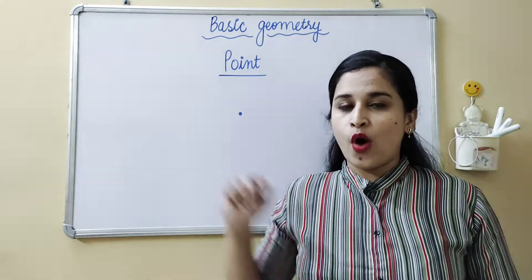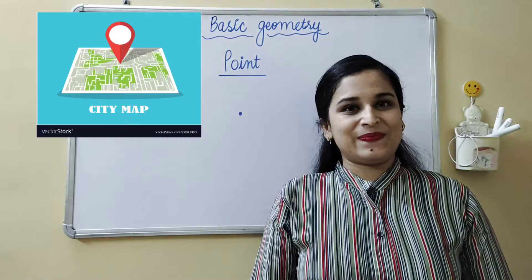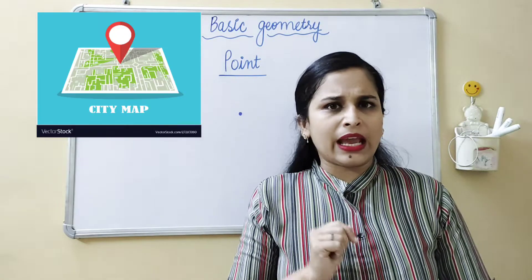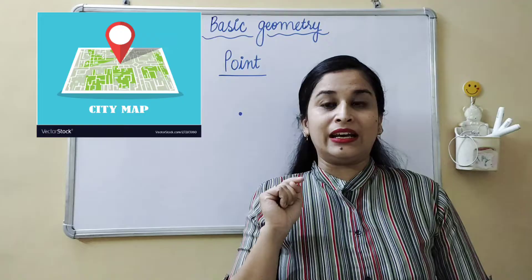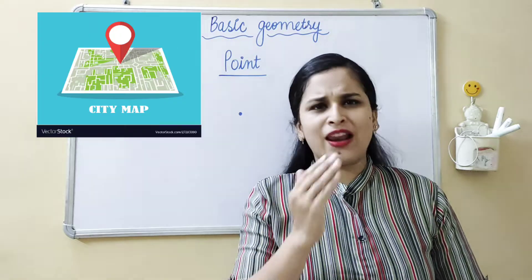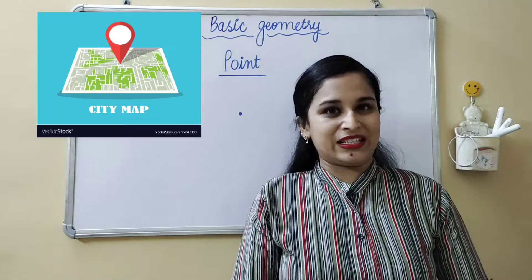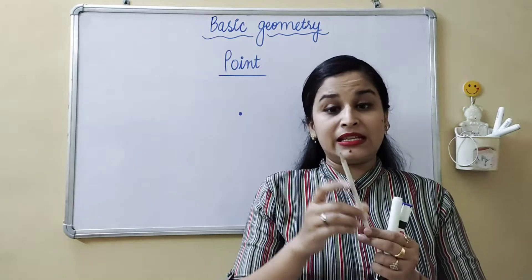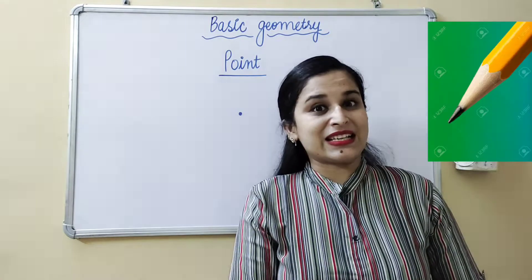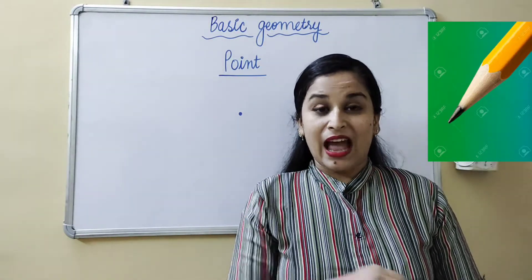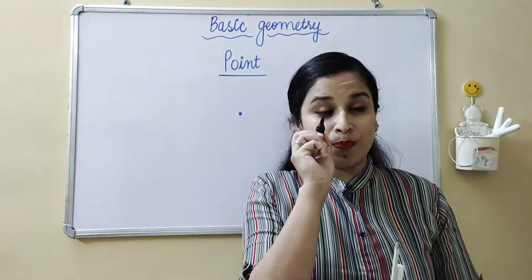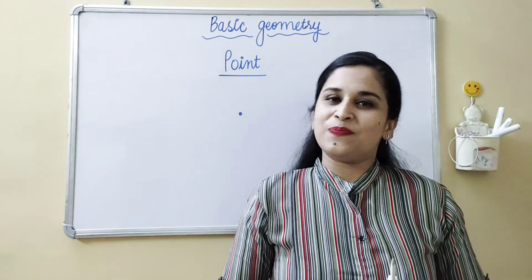The real life example of a point is this. When we locate our location on Google Maps, you can see there is a red color point made to show your location. So you are well aware of what a point is. We can also say this pencil tip is a point. The tip of this marker will also be the point.